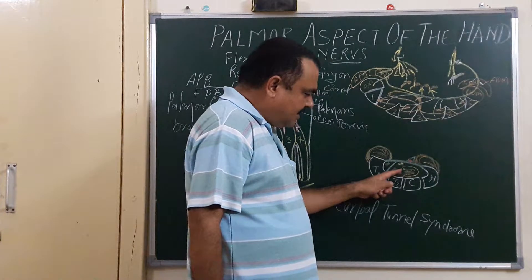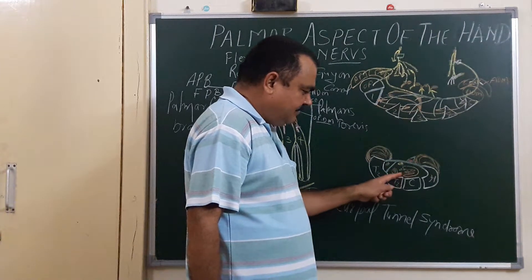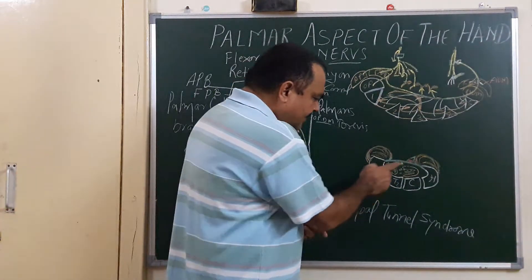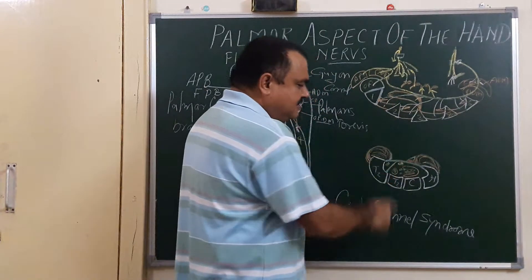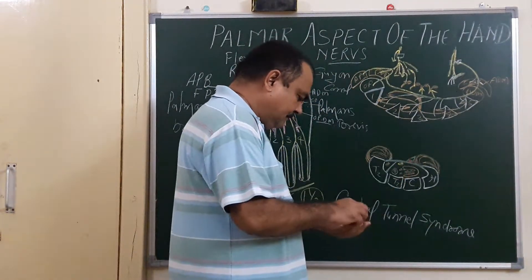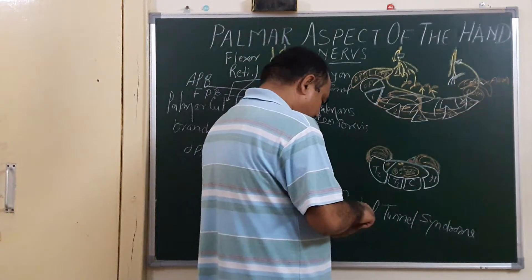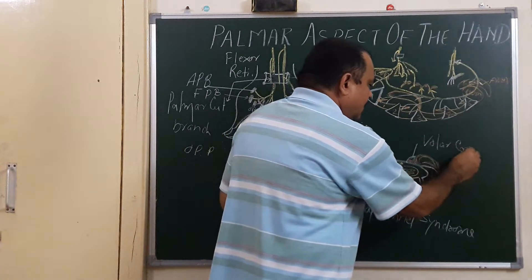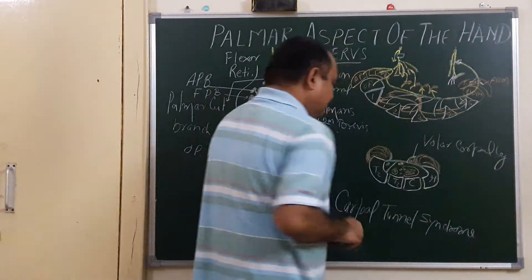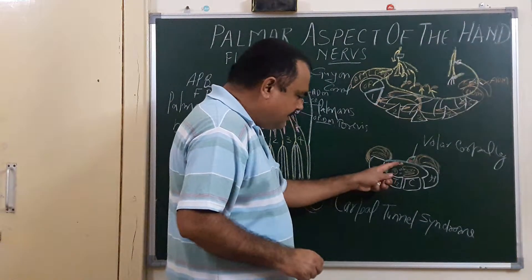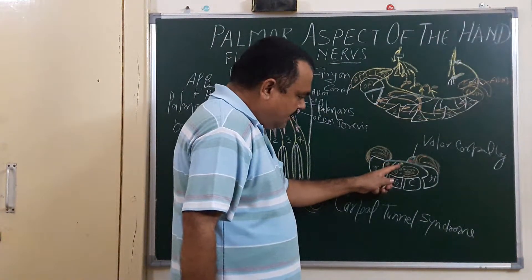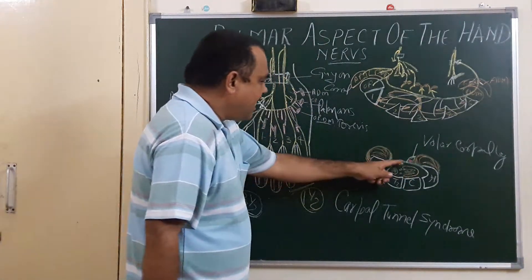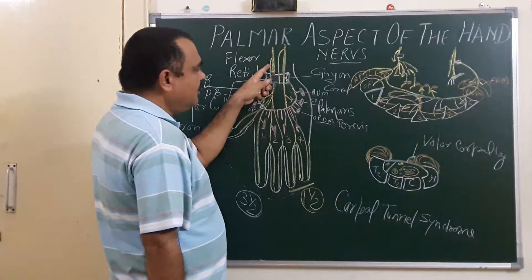Here is the flexor pollicis longus tendon and the flexor digitorum superficialis tendons. Some structures lie superficial to the flexor retinaculum. Here is the palmar carpal ligament. The median nerve lies deep to the flexor retinaculum, present within this tunnel, and gives off a branch — the palmar cutaneous branch.